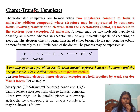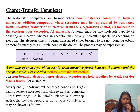As the name indicates, charge transfer complexes involve the transfer of electrons. They are formed when two substances combine to form molecular addition compounds, whose structure may be represented by resonance forms involving transfer of an electron from the electron-rich donor molecule to the electron-acceptor molecule.